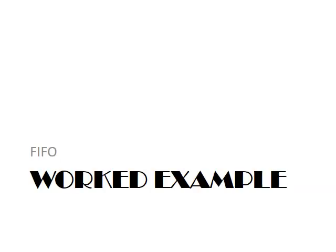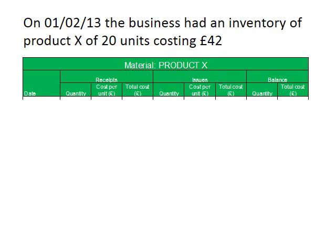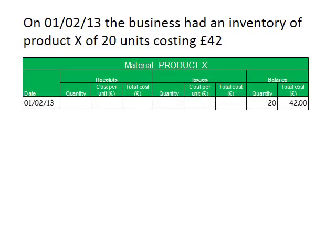Let's have a look at a worked example of how we would complete a stock card using FIFO. On the 1st of February 2013, the business holds an inventory of Product X of 20 units which has cost it £42. We're going to record the date that the inventory has been brought forward on. It's not a receipt or an issue so we don't need to complete any of those cells, but we do need to record the balance: a quantity of 20 units which cost a total of £42.